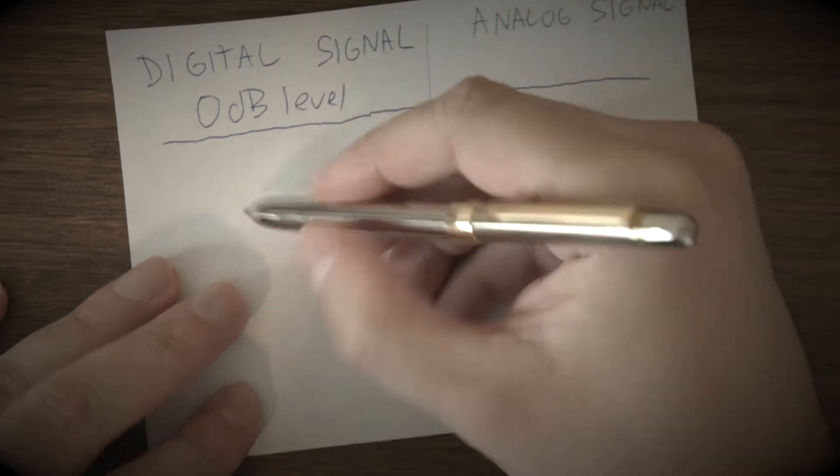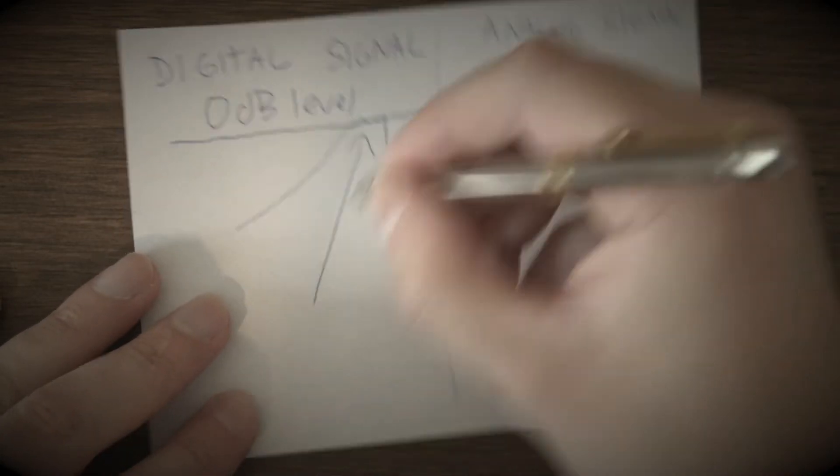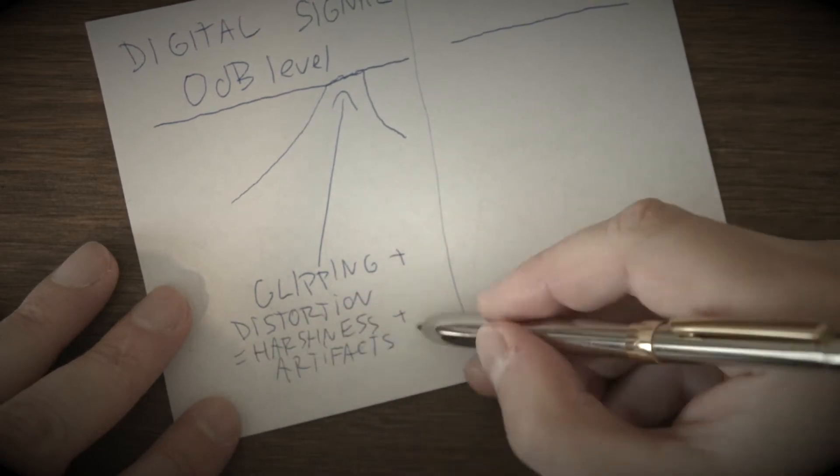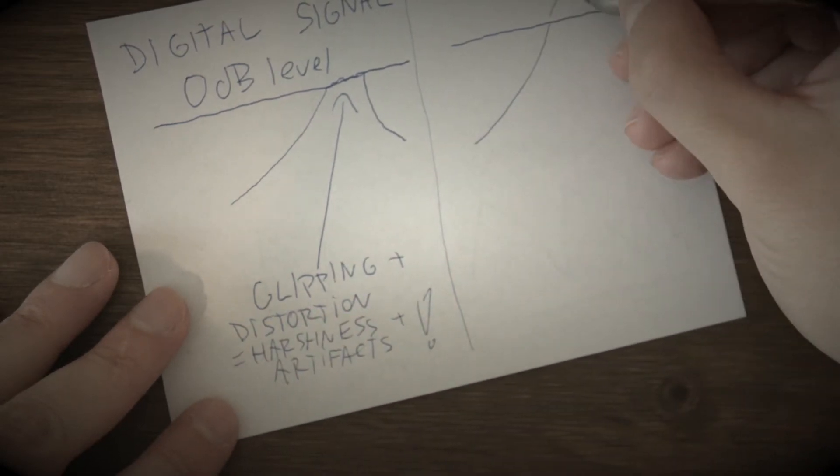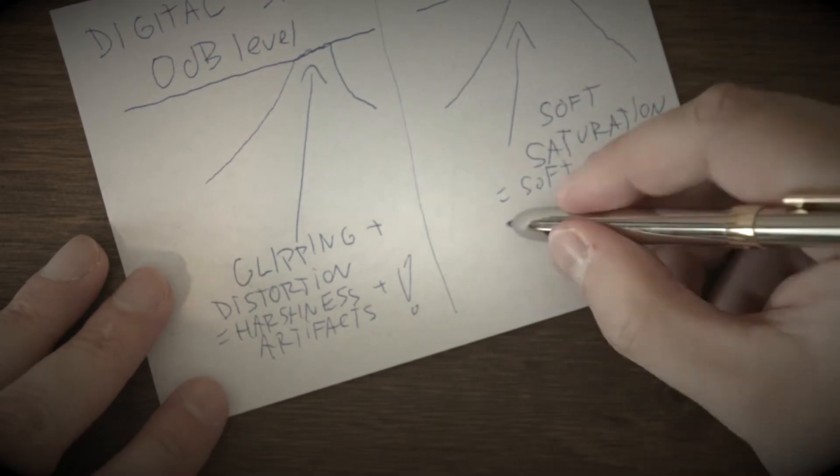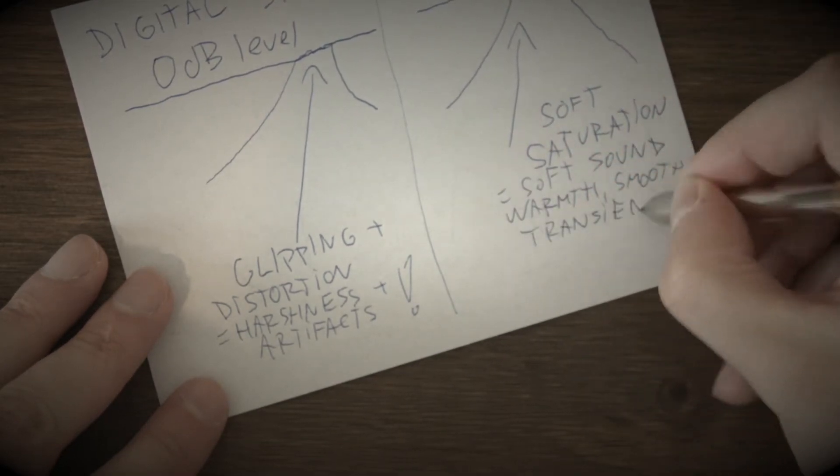When digital signal is louder than 0 dB, spike of this signal above this level is cut, which makes clipping and ugly saturation. While in analog domain, spikes of loud signal are not clipped, they are saturated, which creates nice soft and fat sound.